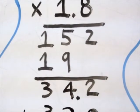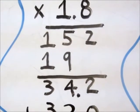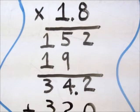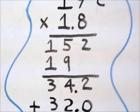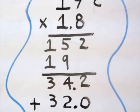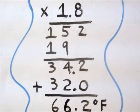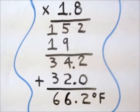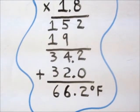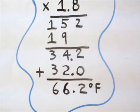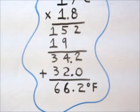So for example, let's say we want to convert 19 degrees Celsius into a Fahrenheit temperature. We take 19, multiply it by 1.8 to get 34.2. We then add 32 to that answer to get a Fahrenheit temperature of 66.2 degrees.